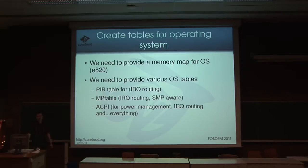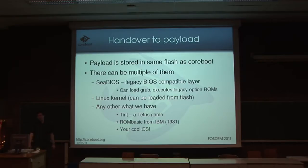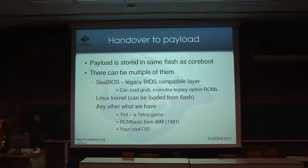Here is some information about the tables. It's mostly IRQ routing tables — depending on the board layout, you need to know which device has which IRQ line. Plus of course ACPI, which is a very big specification and contains everything. We support it in coreboot. The last thing is to load something: it can be an operating system, it can be some game, it can be a very old legacy ROM like ROM BASIC. We use SeaBIOS, which is a compatibility layer between coreboot and the operating system — you know this from QEMU, because when QEMU loads you can see it. It's the layer used to load the operating system like a legacy BIOS.